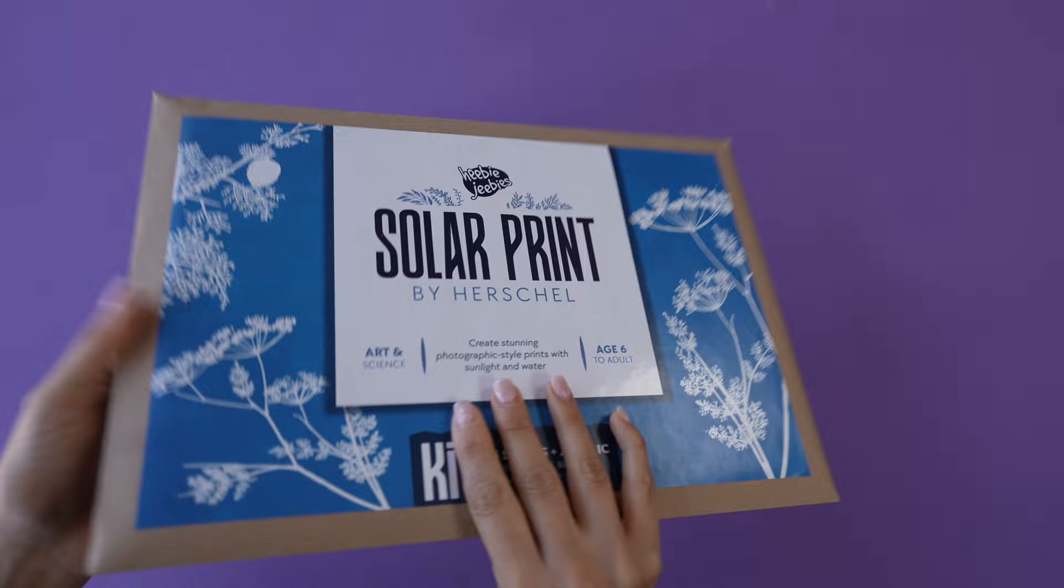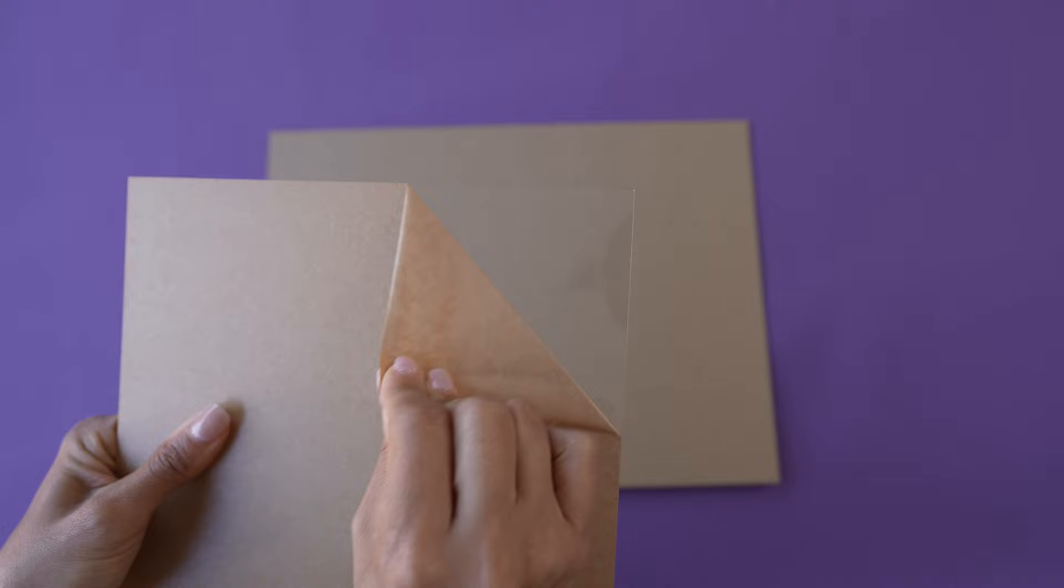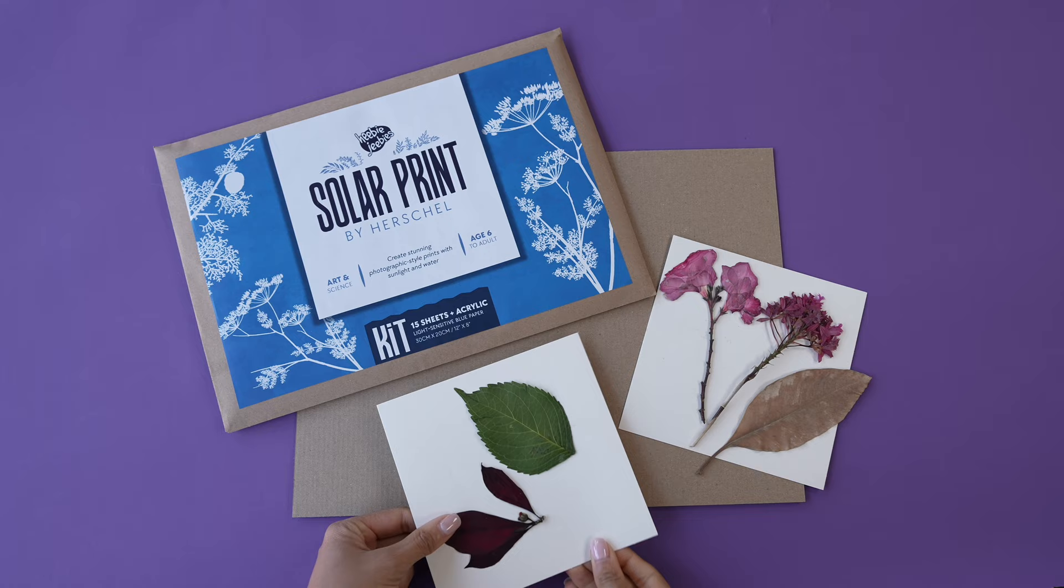Arrange all your necessary elements: a piece of cardboard or plain timber, acrylic sheet, solar print paper, and gather your natural elements such as leaves and flowers.